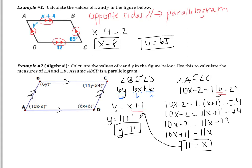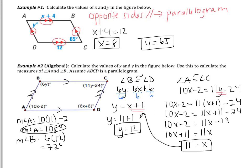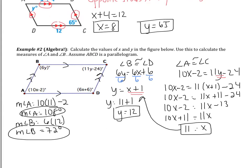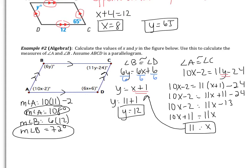Finally, we calculate the measures of angles A and B. The measure of angle A is 10 times 11 minus 2, which is 108 degrees. The measure of angle B is 6 times 12, which is 72 degrees. Notice that 108 plus 72 equals 180 — A and B are consecutive angles, and this leads to the next property.